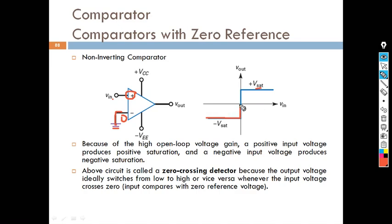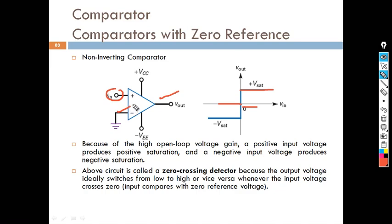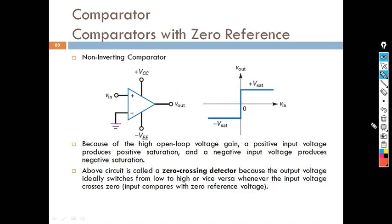For example, when the input is zero, the output is also zero. But when the input increases above zero, the non-inverting terminal becomes higher than the inverting terminal, so the output will be positive Vsat. When the input goes in the negative direction, the inverting terminal becomes higher, and the output is negative Vsat. You will get either negative Vsat or positive Vsat depending on whether the input is above or below zero. This is called the zero crossing detector — one of the applications of the comparator.